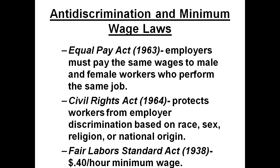Another trend over the past 100 years is more anti-discrimination and minimum wage laws being implemented by the government. A good example is the Equal Pay Act of 1963, which said that employers must pay the same wages to male and female workers who perform the same job. The Civil Rights Act of 1964 protects workers from discrimination based on race, sex, religion, or national origin. And the Fair Labor Standards Act established the minimum wage — back in 1938 when it was established it was 40 cents an hour, and it has gone up quite a bit since then.